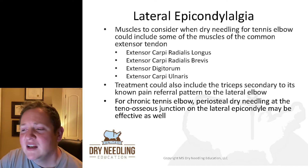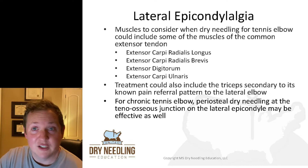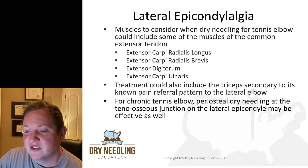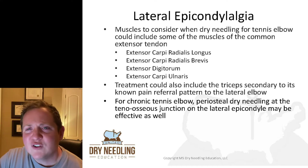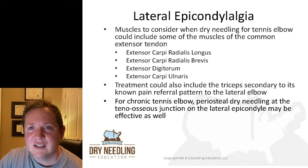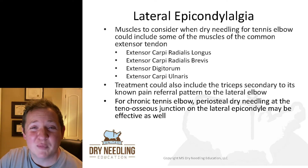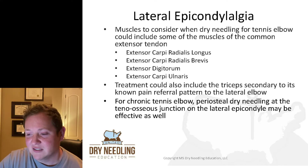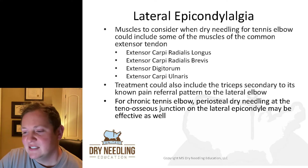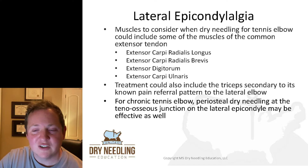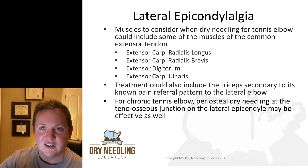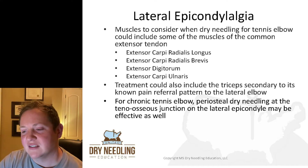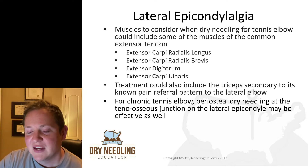Muscles to consider when dry needling for tennis elbow include those in the common extensor tendon: extensor carpi radialis longus, extensor carpi radialis brevis, extensor digitorum, and extensor carpi ulnaris. You should also include the triceps, as it has a well-established pain referral pattern by Travell and Simons that goes to the lateral elbow. For chronic tennis elbow, you can also perform periosteal dry needling at the tenoosseous junction of the common extensor tendon, pecking on the lateral epicondyle to restart the inflammatory process.